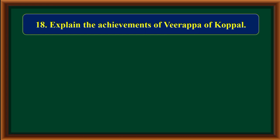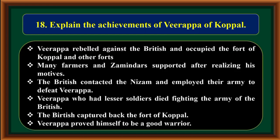Explain the achievements of Virappa of Koppal. Virappa rebelled against the British and occupied the fort of Koppal and other forts. Many farmers and Zamindars supported him after realizing his motives. The British contacted the Nizam and employed their army to defeat Virappa. Virappa, who had fewer soldiers, died fighting the combined army. The British captured back the fort of Koppal. Virappa proved himself to be a good warrior.